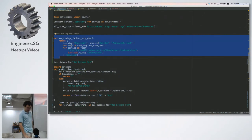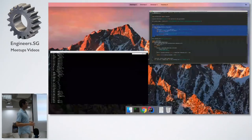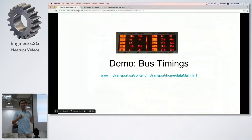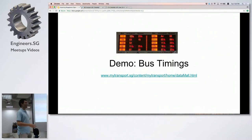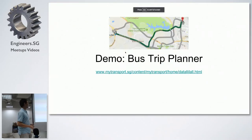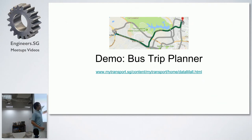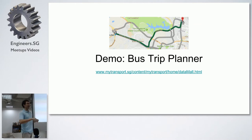That's the first demo — making a bus arrival time display. It's in the terminal rather than on a board at the bus stop, but functionally it's much the same. The next demo will be making a bus trip planner using the same dataset. The goal is: given I'm at bus stop one and want to get to bus stop two, what bus stops and services do I take, with how many transfers, to reach my destination?